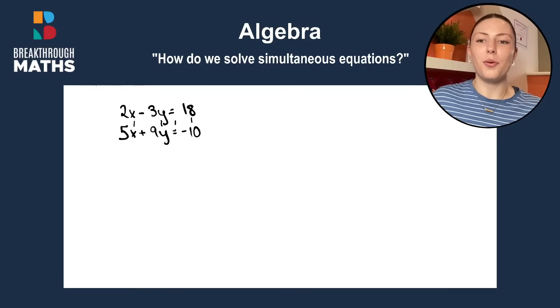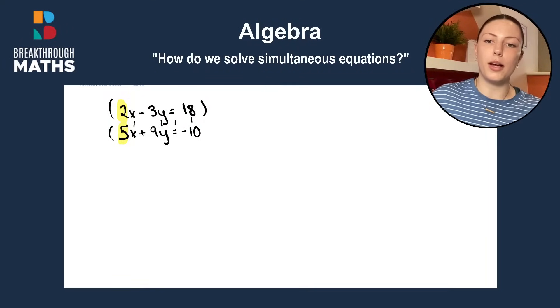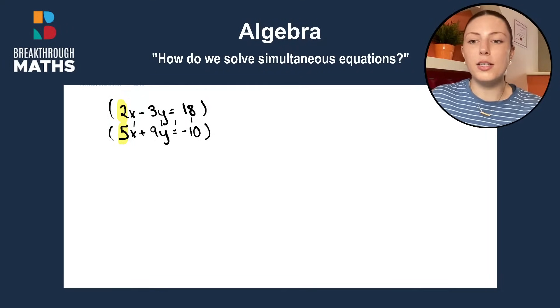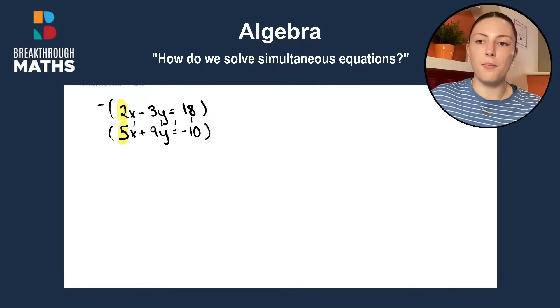Okay, next up, we look at the number in front of our x on each equation. So, you can see it's 2 on the top equation and 5 on the bottom equation. So, what we do from here is we multiply the top equation by 5 and the bottom one by 2.